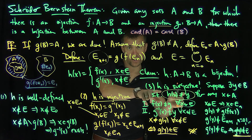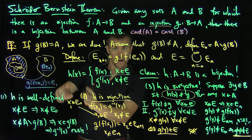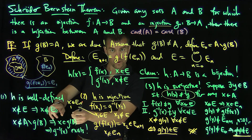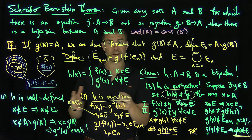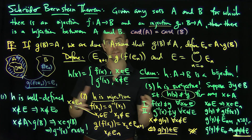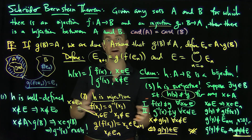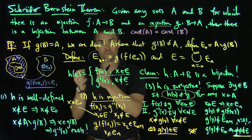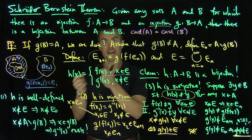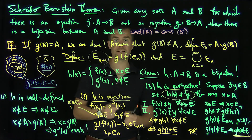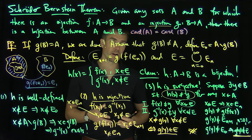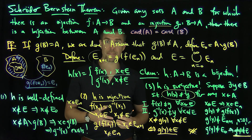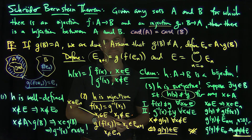So H is a surjection, an injection, and it's well-defined between A and B. Now we have a way of showing that two sets have the same cardinality by finding an injection from A into B and an injection from B into A — that's a very powerful tool for proving that two sets have the same cardinality. Thank you very much.